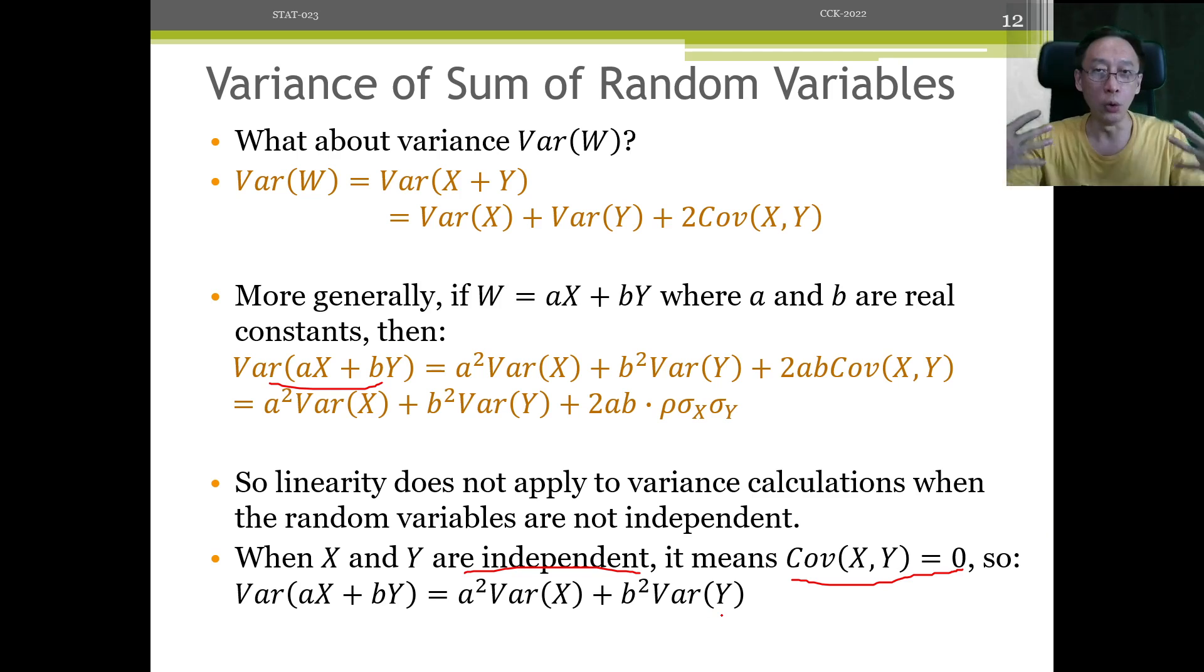So they are very robust, very solid, regardless of the relationship or intermingling effects of X and Y, the inner workings part of X and Y, whether they are very intricately related, affecting each other or not, totally not important. These two formulas, E of W, variance of W still work. Really powerful.